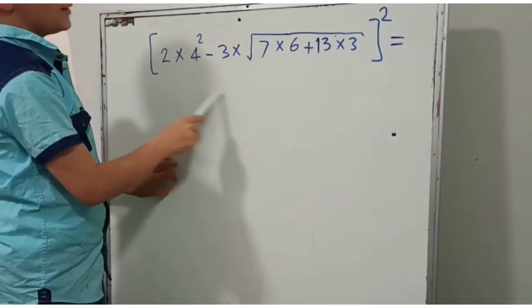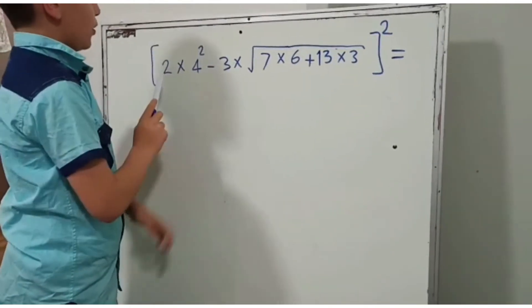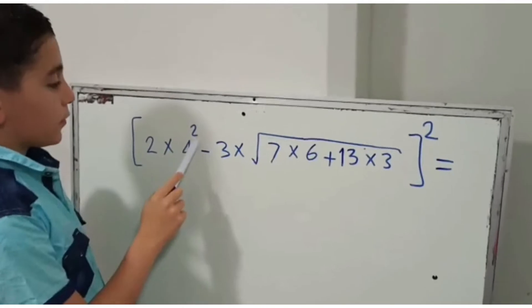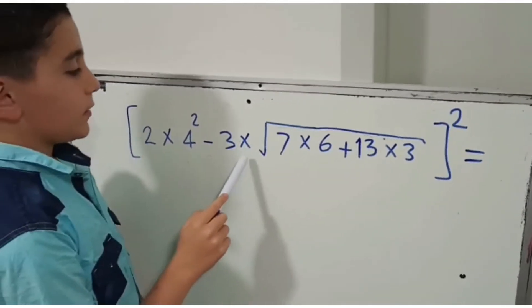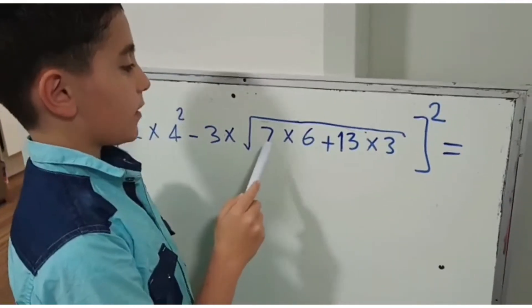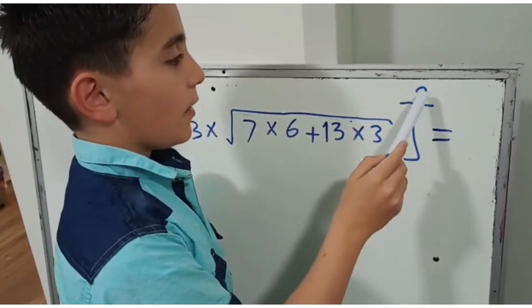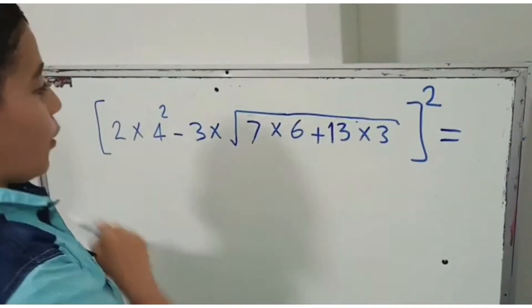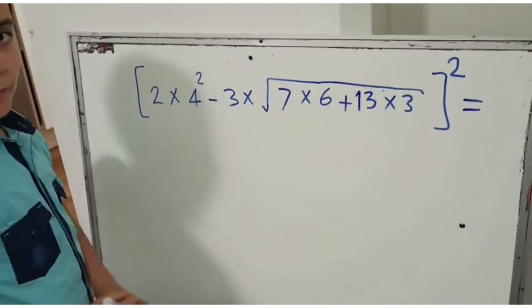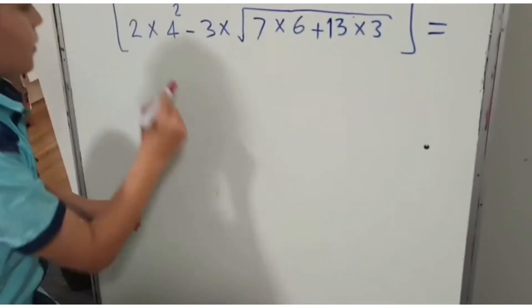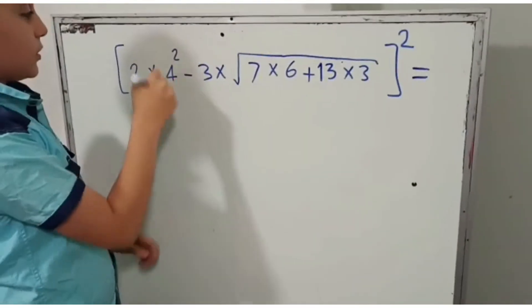So first I'm going to read you the question. 2 times 4 squared minus 3 times under root 7 times 6 plus 13 times 3, squared for the whole question. Now we need to start with this question.